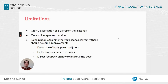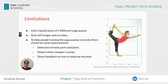Until now I can classify only five different yoga asanas on images and not on video. But to really help people correctly do asanas, there would need to be some more improvements, like the detection of body parts and detecting minor changes in the poses to give direct feedback — like this is done here, for example.